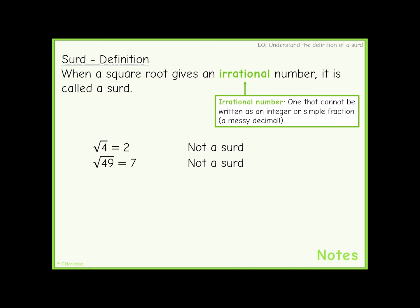The square root of 49 is 7. This is also not a surd.